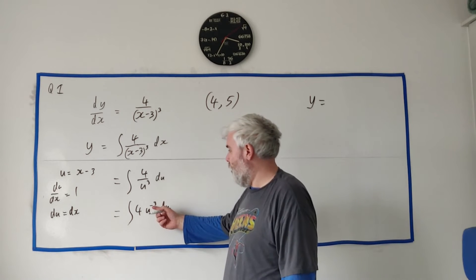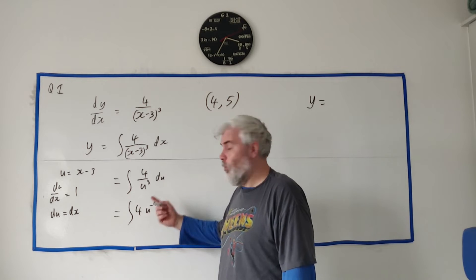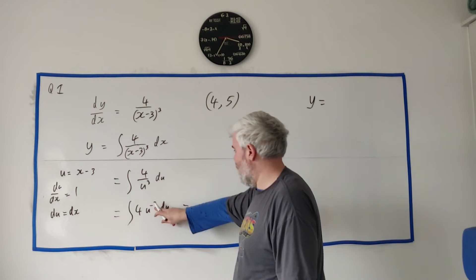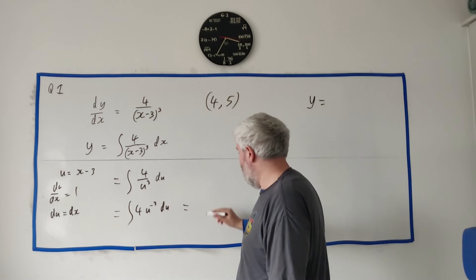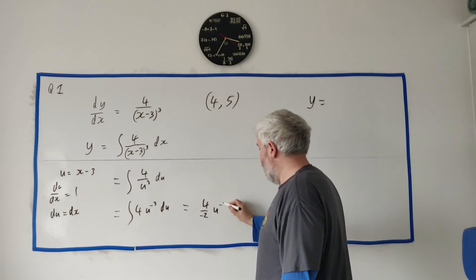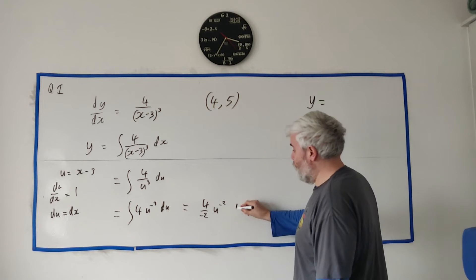We take this power, add 1 to it, and divide. So this becomes, let's see, this power add 1, we get minus 2. So 4 divided by minus 2, u to the minus 2, plus some constant.